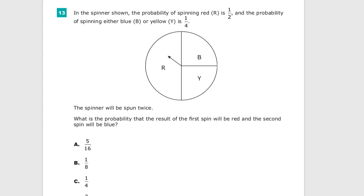In the spinner shown, the probability of spinning red is 1 out of 2, which makes sense because the R takes up half of the little circle here. The probability of spinning either blue or yellow is 1/4. So you have 1/4 there, and 1/4 there, and 1/2 there.